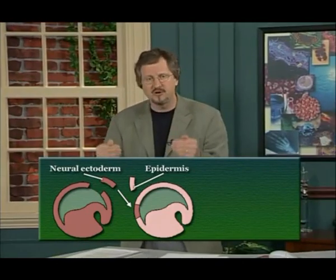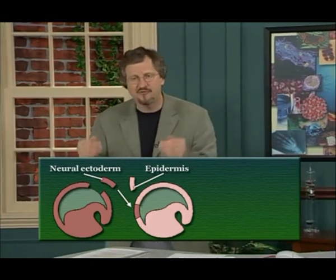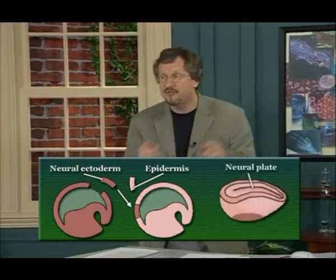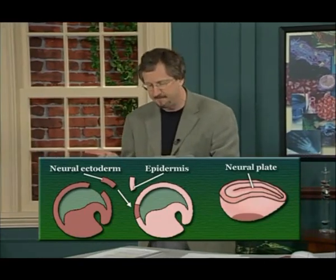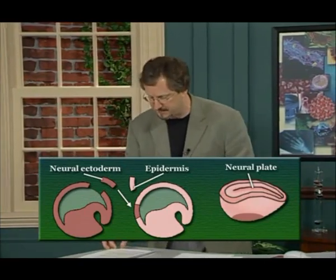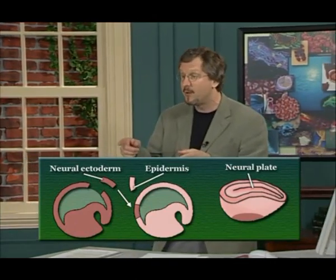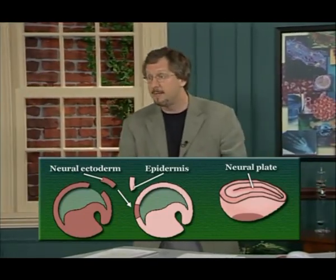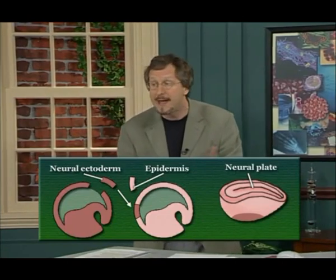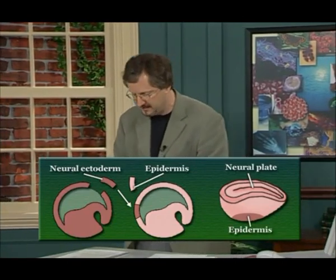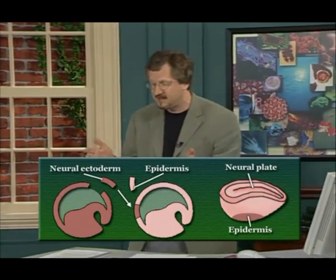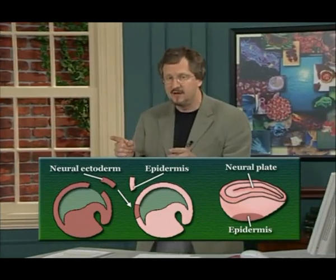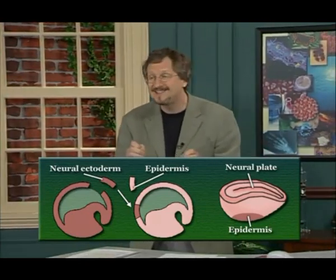One of Spemann's most important early findings was that if these kinds of transplants were done early enough, the transplanted piece of tissue would develop according to where it was transplanted, not according to where it came from. So if Spemann took a piece of embryo from a region fated to become neural ectoderm and put it into a different embryo in a region fated to become epidermis, the transplanted tissue would become epidermis — it wouldn't remain neural ectoderm. This showed that the ultimate fate of the transplanted tissue had not been determined at the time of transplant and would eventually be determined according to the cells it was in contact with.